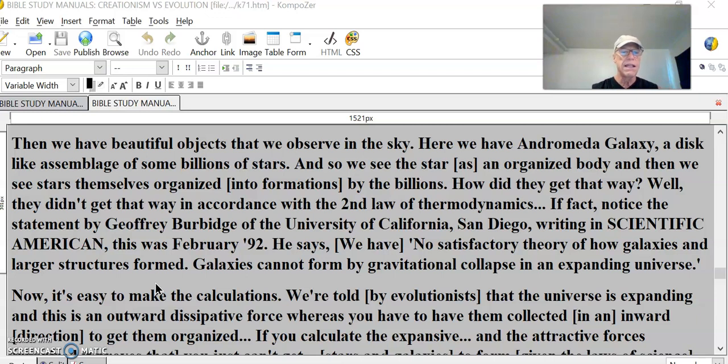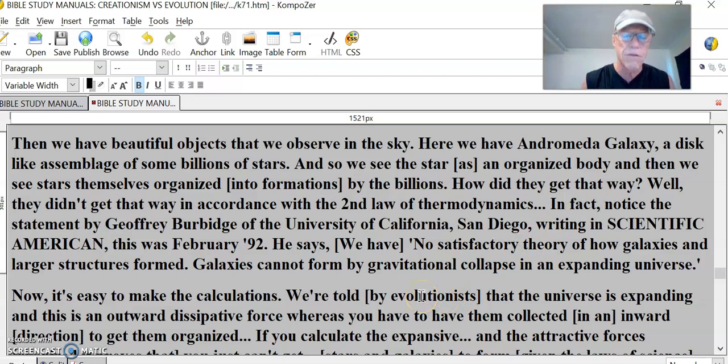Well, they didn't get that way in accordance with the second law of thermodynamics. Notice the statement by Jeffrey Burbage of the University of California, San Diego, writing in Scientific American, February 1992: We have no satisfactory theory of how galaxies and larger structures form. Galaxies cannot form by gravitational collapse in an expanding universe.